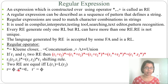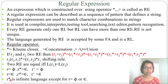If R equals phi, then R* will be epsilon and R+ will be phi. If R equals epsilon, then R* will be epsilon and R+ will also be epsilon. So R* is an infinite language except when R equals phi or R equals epsilon. When R equals phi, R* is epsilon, so it is finite. When R equals epsilon, R* is epsilon — it contains only one string, so it is finite. Except these two cases, R* will be infinite.